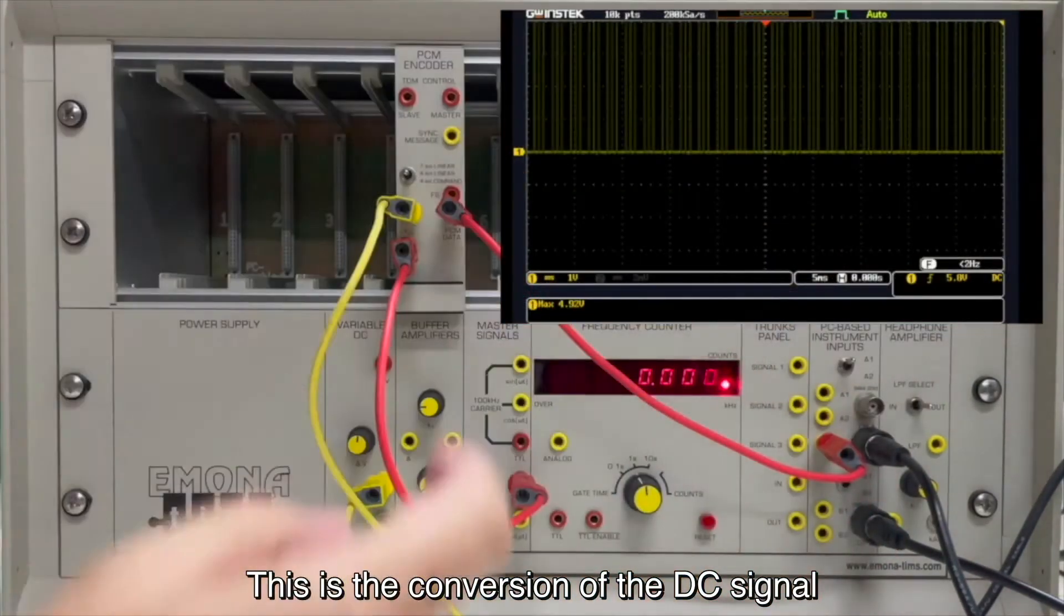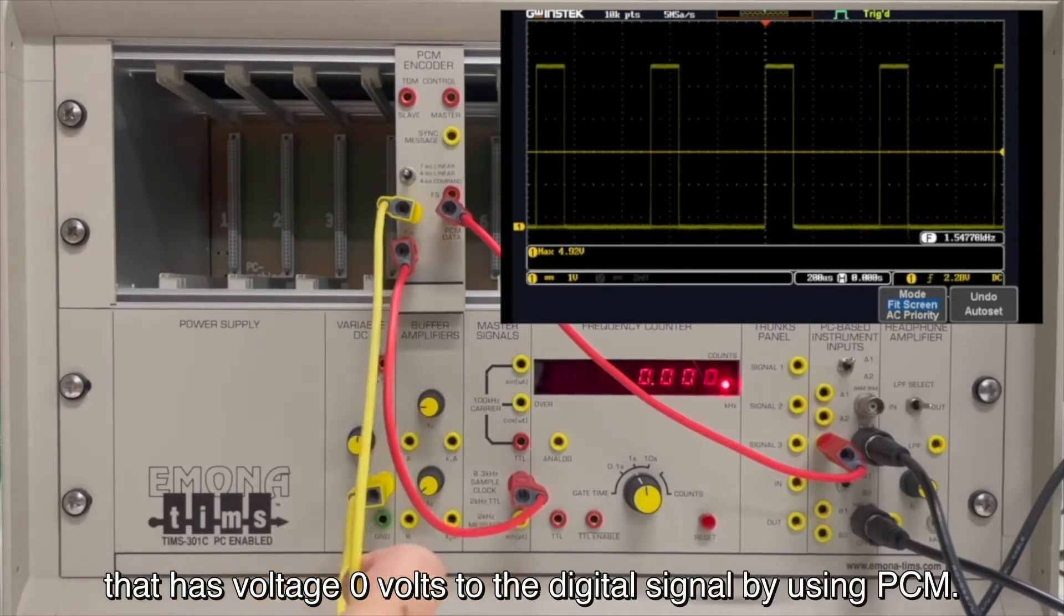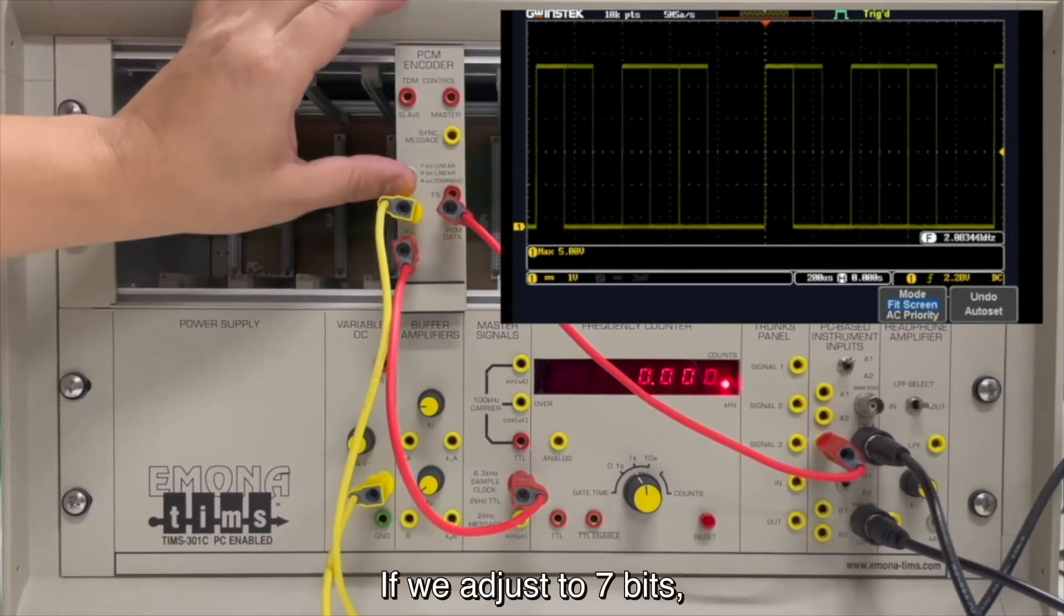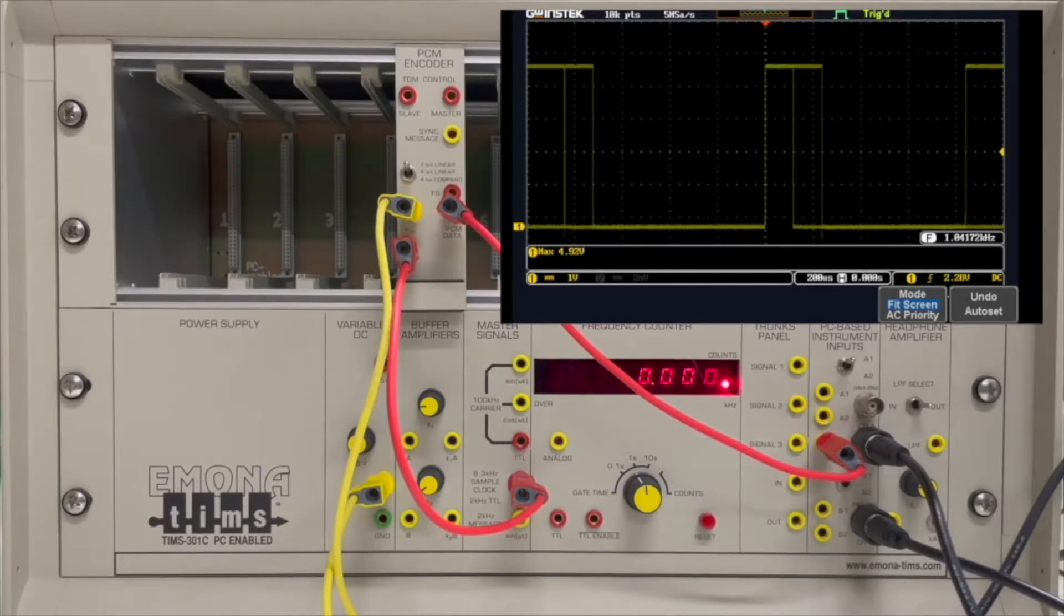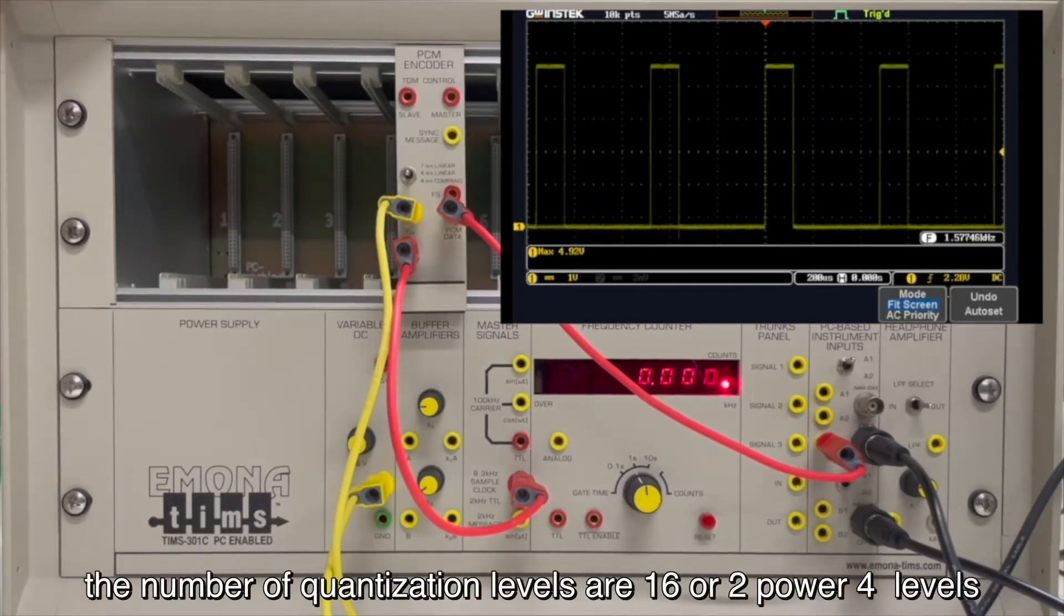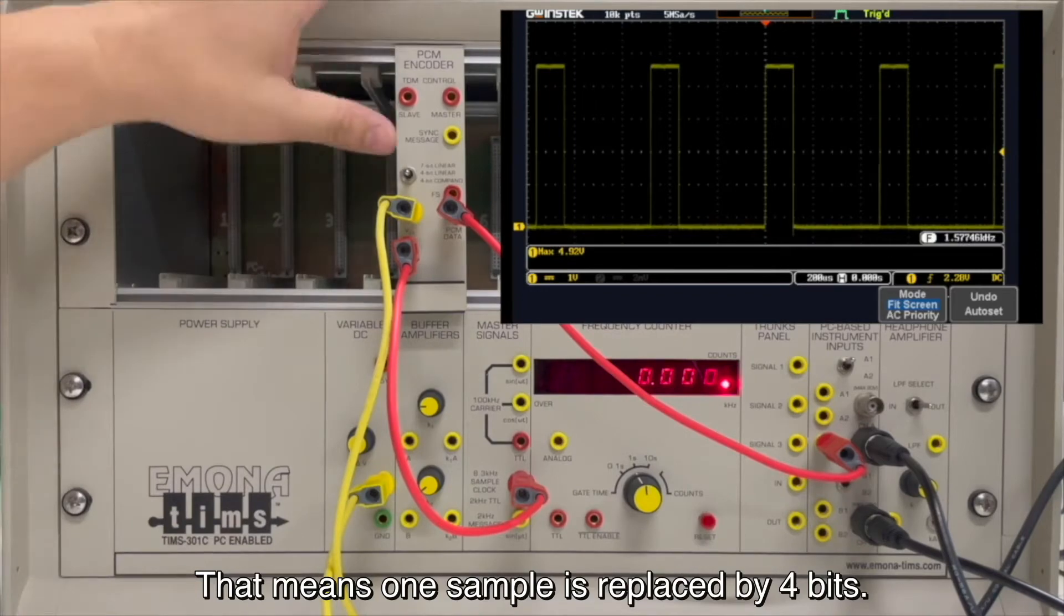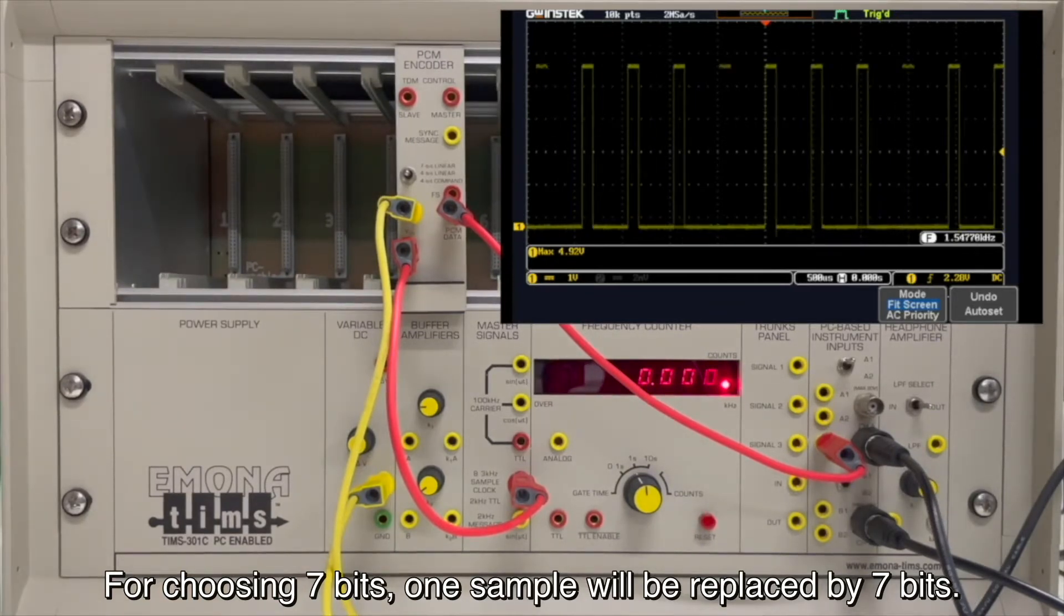This is the conversion of the DC signal that have voltage zero volts to the digital signal by using PCM. There are many modes for choosing right here. If we adjust to 7 bits, the number of quantization levels are 128 or 2 power 7 levels. For using 4 bits, the number of quantization levels are 16 or 2 power 4 levels. That means one sample is replaced by 4 bits. For using 7 bits, one sample will be replaced by 7 bits.